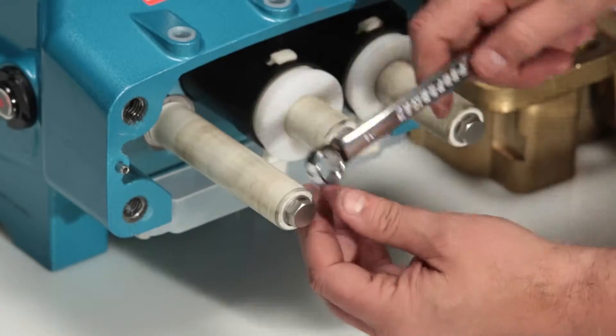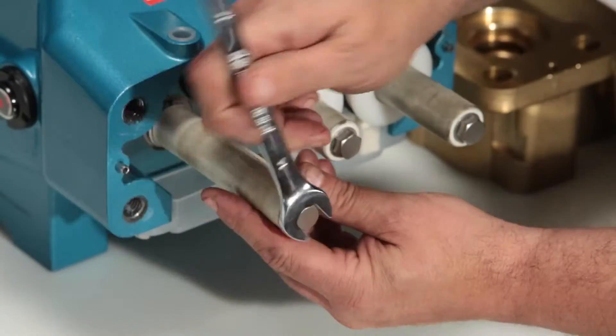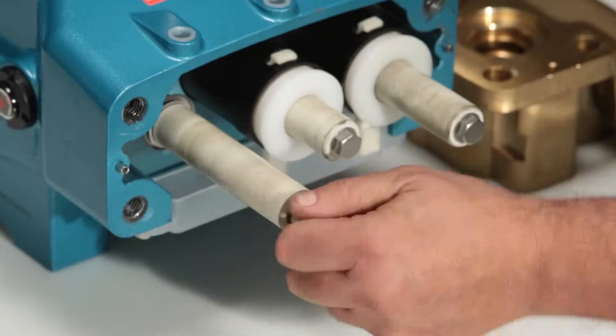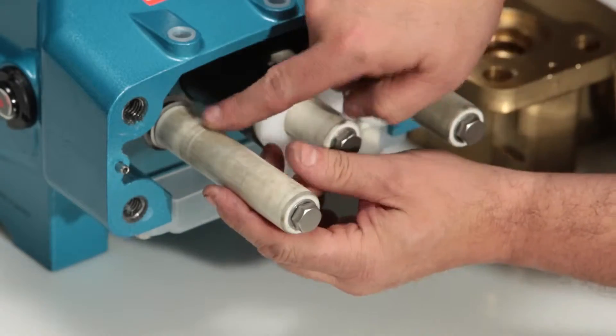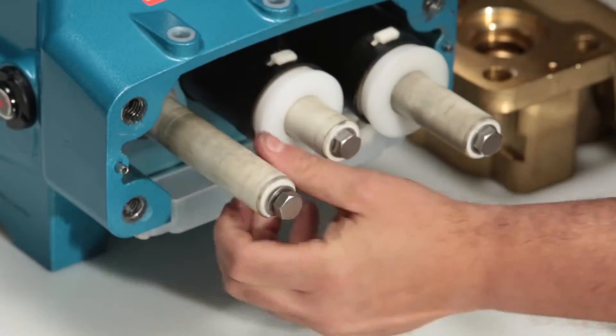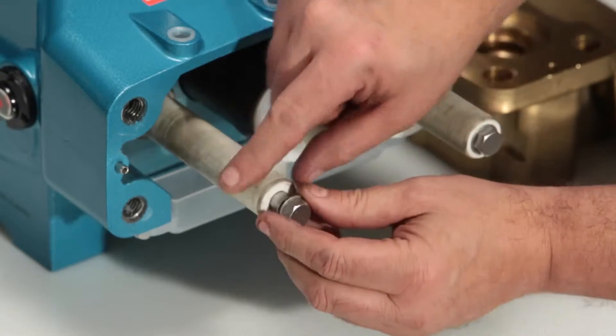To remove the plunger retainer, use a 14mm hex wrench. Before completely removing the retainer, stop and push the plunger towards the drive end to break loose from the drain. You can then completely remove the retainer.